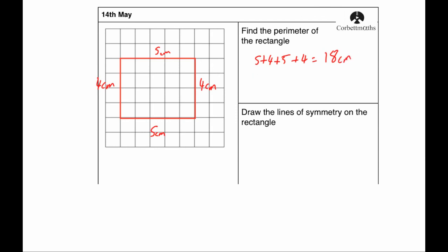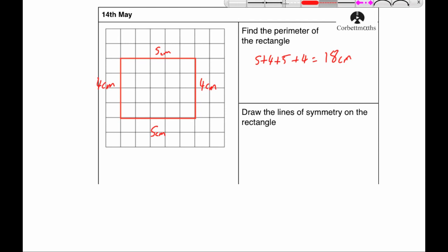And the next question says draw the lines of symmetry on the rectangle. So a rectangle has two lines of symmetry. There's a horizontal one and a vertical one. So the horizontal line of symmetry would look something like that. And the vertical one would look something like that.